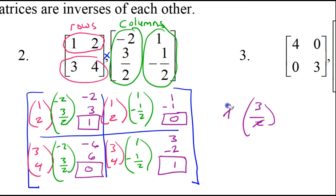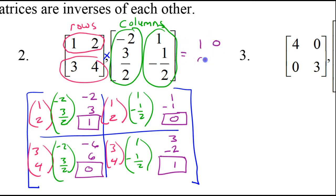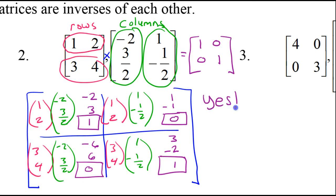The final product is 1, 0, 0, 1. That is the identity matrix. So we will say yes — these two matrices are inverses of each other.